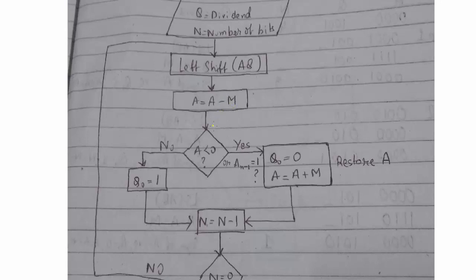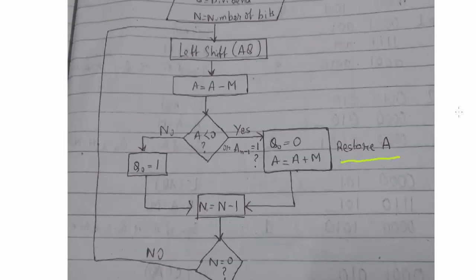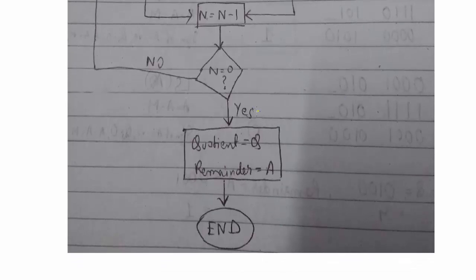After the left shift, we perform the subtraction operation: A equals A minus M. Then we check whether A is less than 0, that is, whether it is negative. If it is negative — meaning the sign bit is 1 — we set the Q0 bit to 0 and perform A equals A plus M; this operation is known as restoring. Then we check whether N has reduced to 0; if not, we go back to the left shift and repeat.